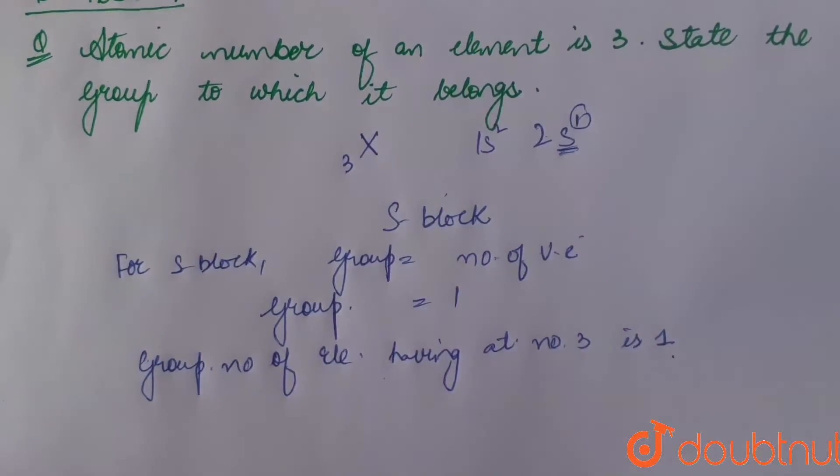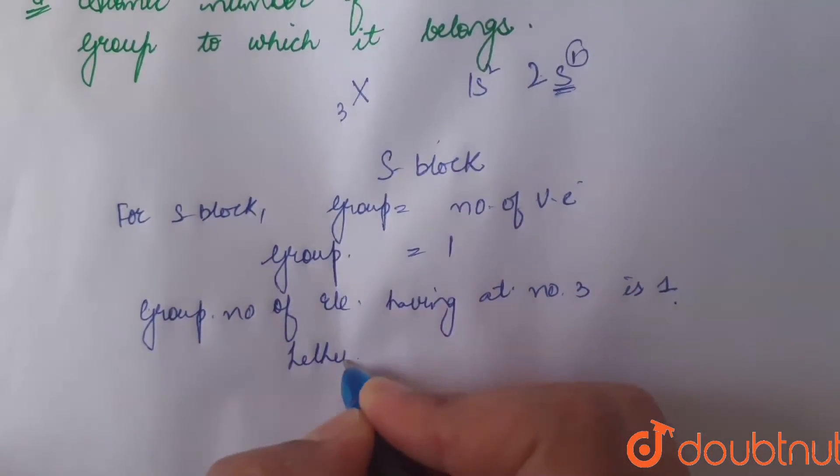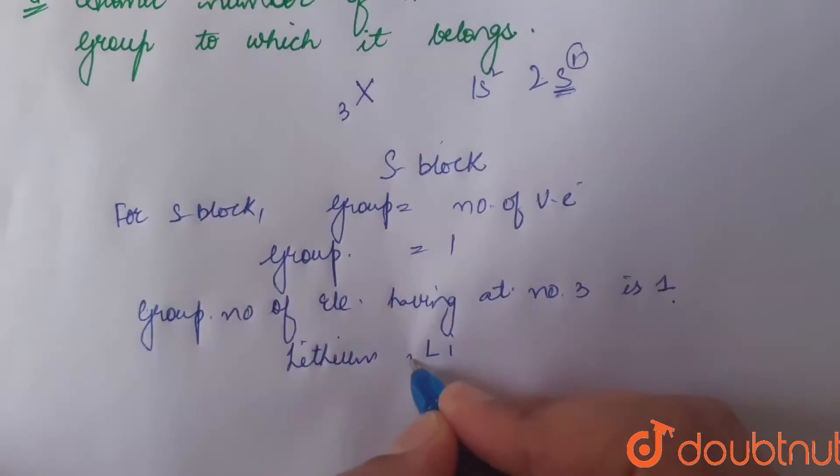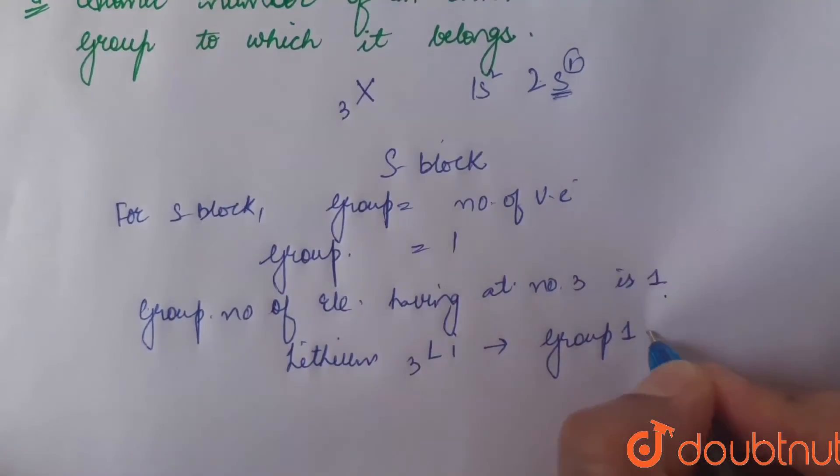Also, 3 is the atomic number of chemical element lithium. Hence, lithium having symbol Li, atomic number 3, it belongs to group 1. To group 1 of periodic table. Thank you.